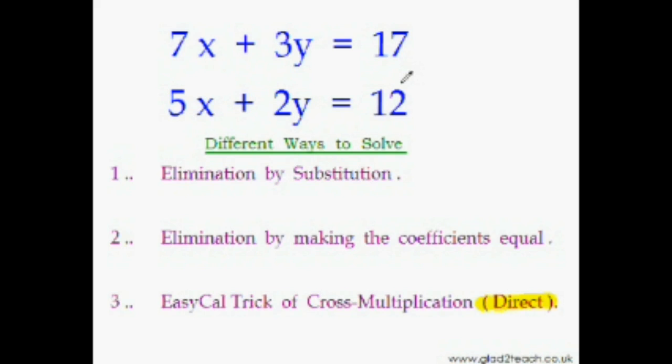Like we have just learned that simultaneous equations can be called by different names, similarly the simultaneous equations can be solved by different ways. The first method, as you can see, goes by the name elimination by substitution. So basically, the idea is very simple: we try to reduce the linear equation in two variables into a linear equation in one variable.